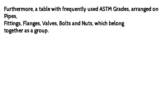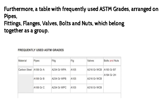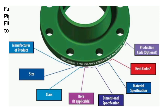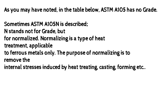Furthermore, a table with frequently used ASTM grades arranged by pipes, fittings, flanges, valves, bolts, and nuts shows which belong together as a group. Note that ASTM A105 has no grade; sometimes ASTM A105N is described — the N stands not for grade but for normalize. Normalizing is a type of heat treatment applicable to ferrous metals only. The purpose of normalizing is to remove internal stresses induced by heat treating, casting, or forming.